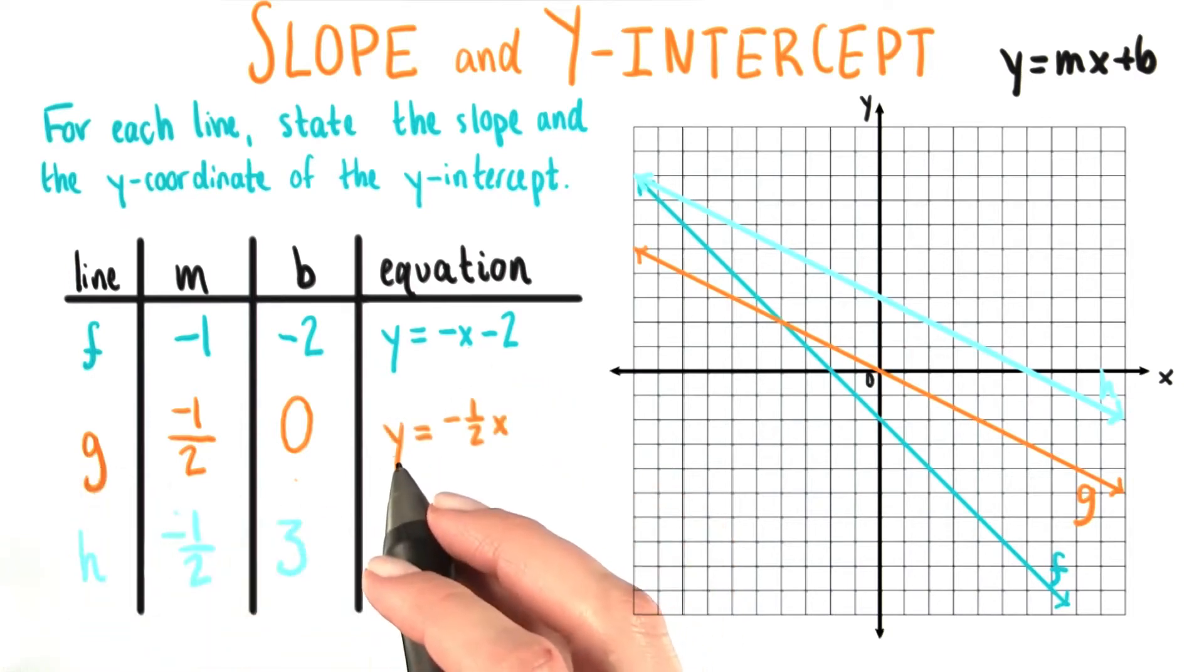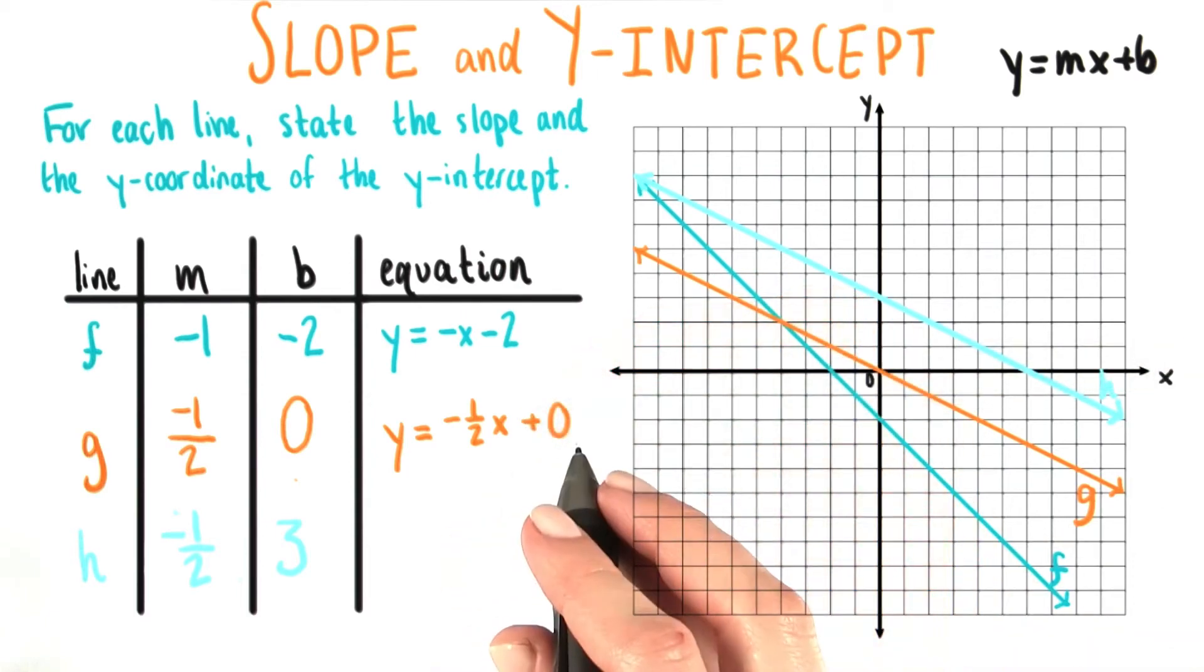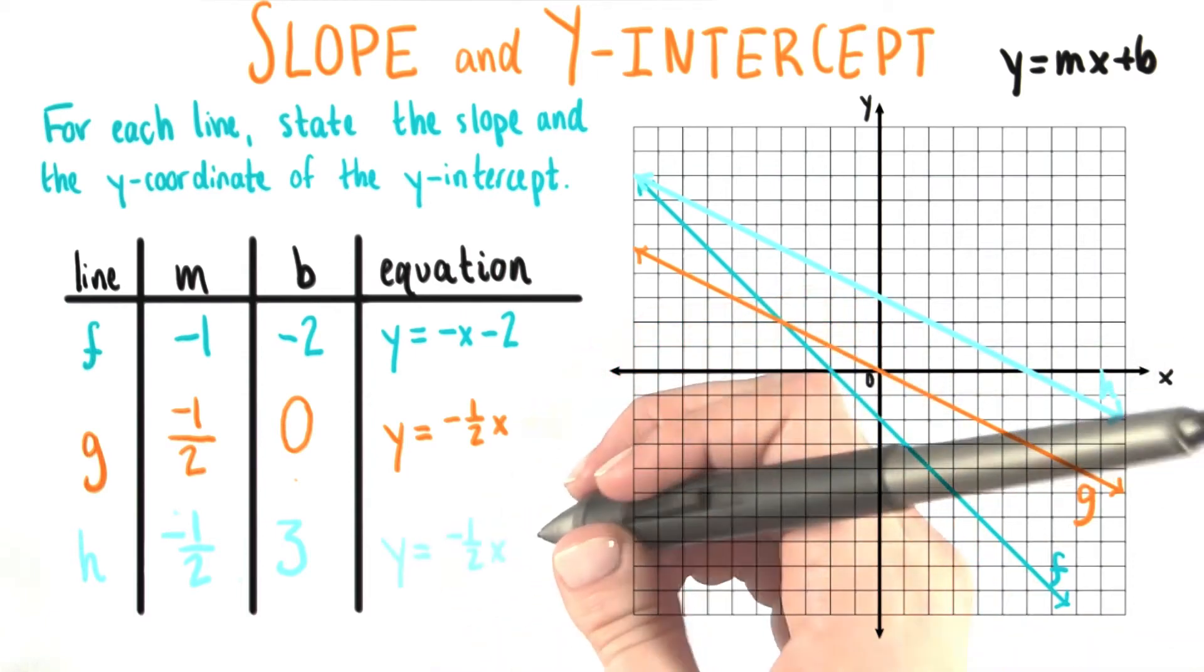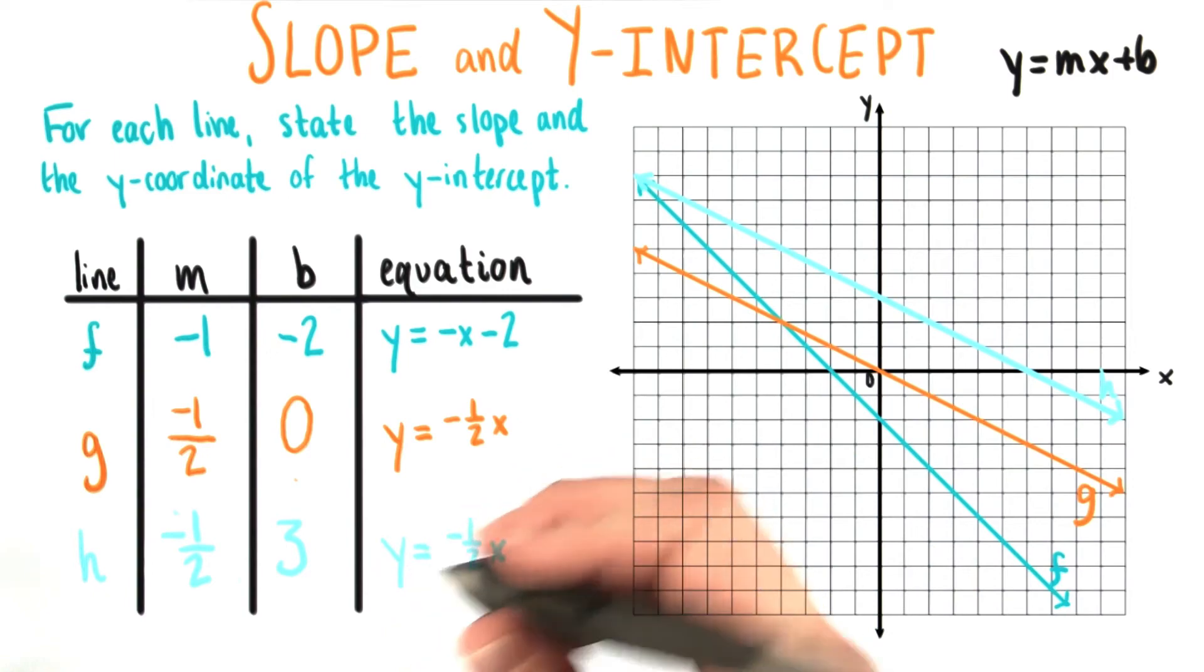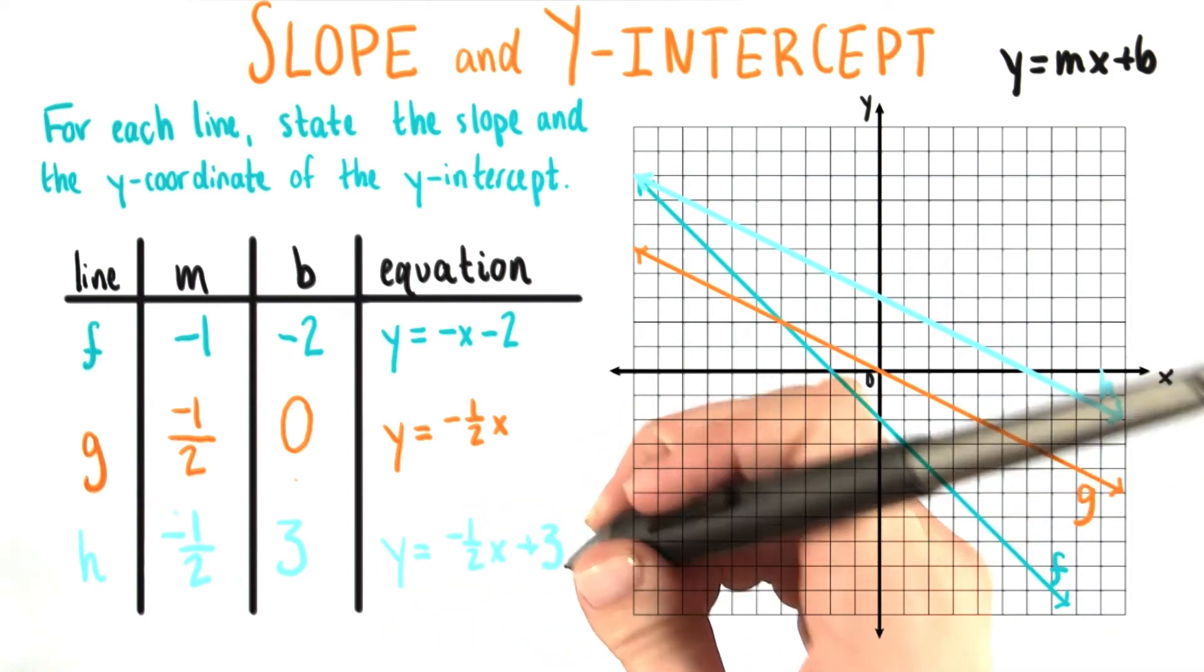Line g, we can just write as y equals negative 1 half x. You could of course also write plus 0 out here, but that's not necessary. And lastly, line h is y equals negative 1 half x plus 3.